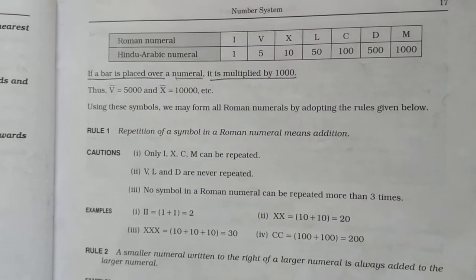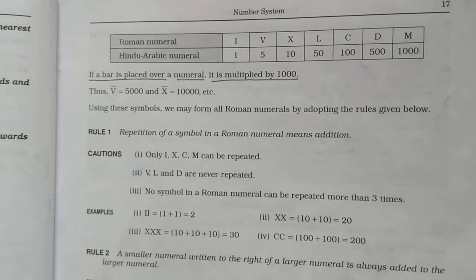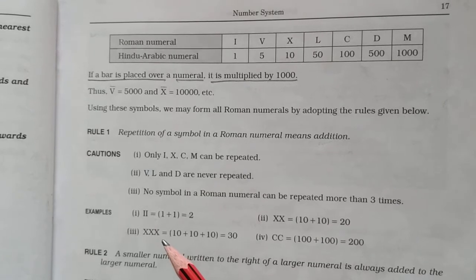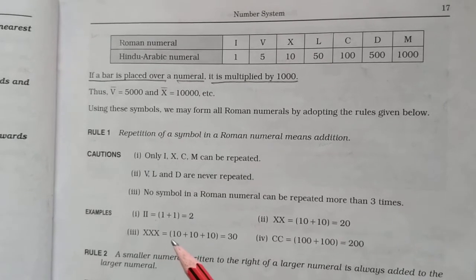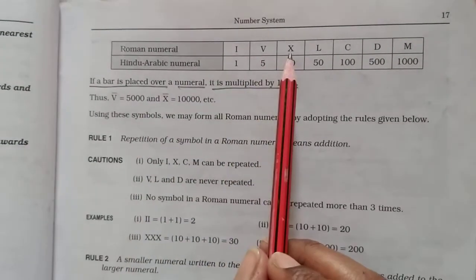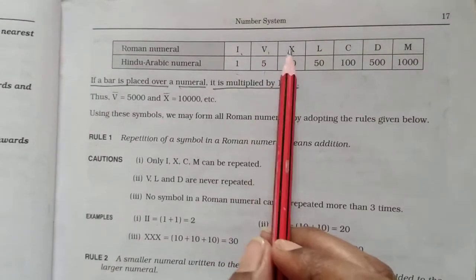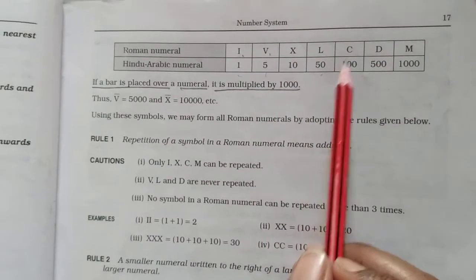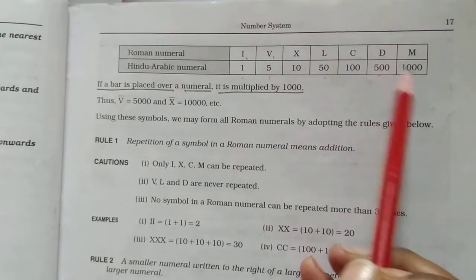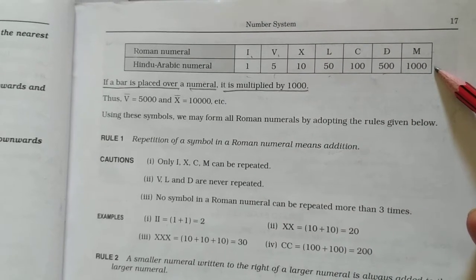Hello, good morning students. Today in this video I will explain Roman Numerals. I have already explained this in the previous class. Now today I will discuss some part of Roman Numerals: I for one, V for five, X for ten, L for fifty, C for hundred, D for five hundred, M for one thousand. These are the symbols and their meanings in Hindu-Arabic numerals.